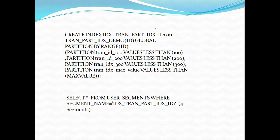With a local index, as partitions were introduced the index partitions also increased — a one-to-one relationship. That's not the case with a global index; Oracle creates one index with a single segment pointing to multiple partitions. The syntax for a global partition index uses range strategy: I'm creating it on the id column with four partitions — first less than 100, second between 100 and 200, third 200 to 300, and the final partition for values greater than 300 up to max value.